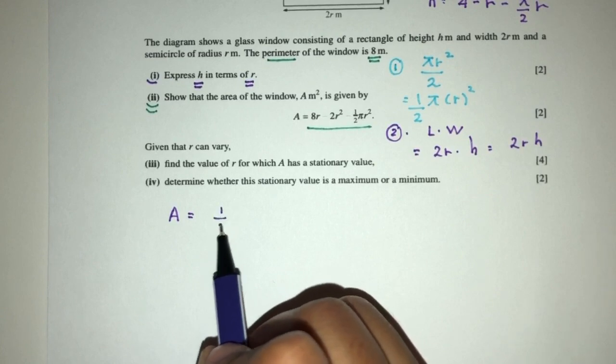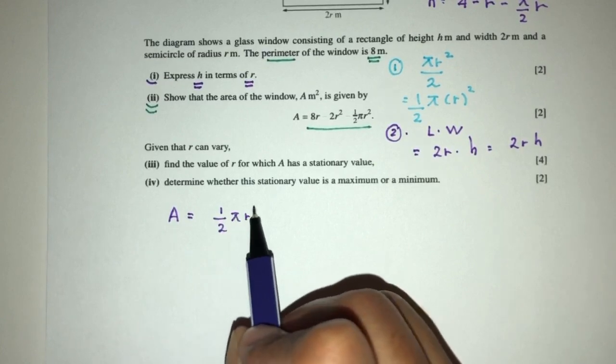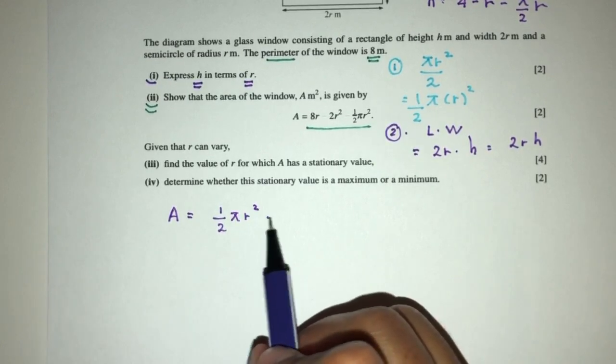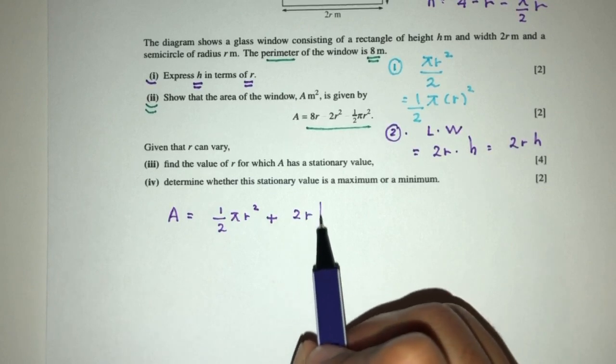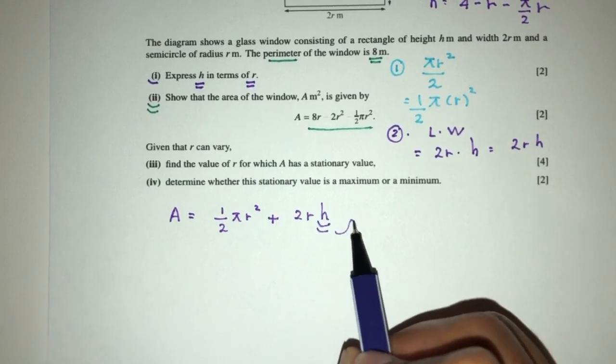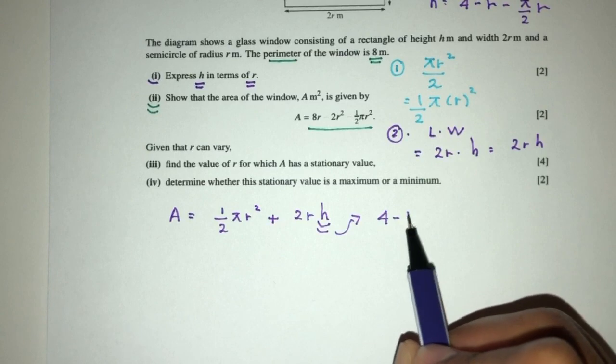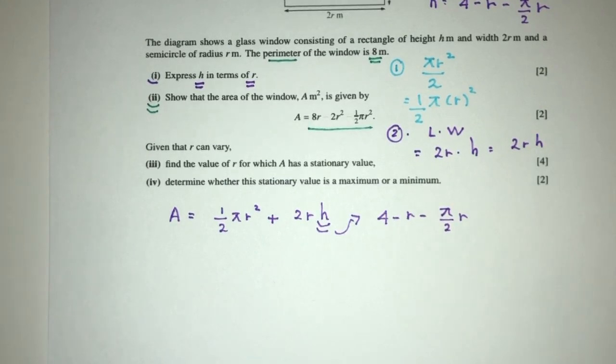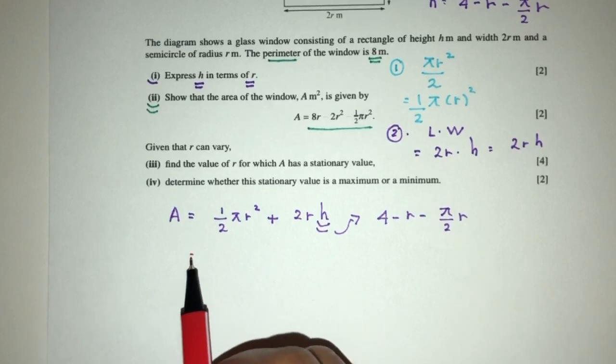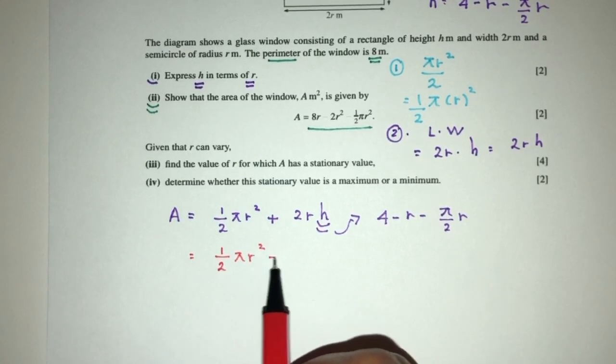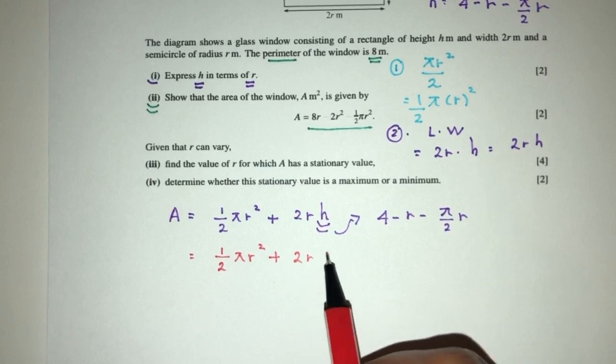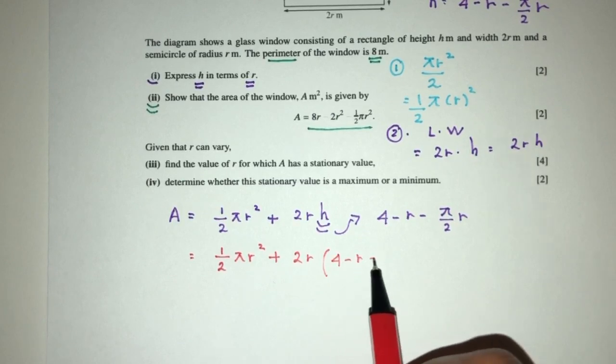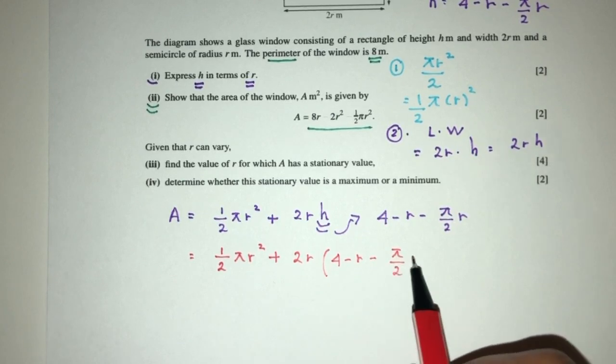We have found will be half πr², and then plus the value of 2rh. Now, we know h was found to be 4 minus r minus π over 2r. So let me rewrite this down.